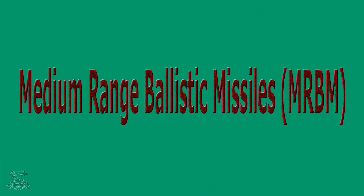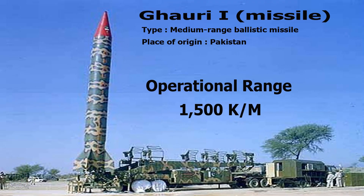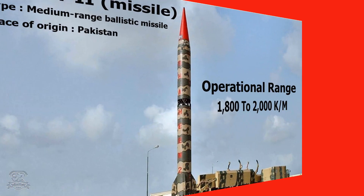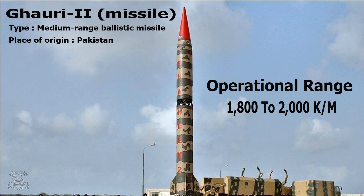Medium Range Ballistic Missiles. Gauri-1 Missile: Type – Medium Range Ballistic Missile, Place of Origin – Pakistan, Operational Range – 1,500 km. Gauri-2 Missile: Type – Medium Range Ballistic Missile, Place of Origin – Pakistan, Operational Range – 1,800–2,000 km.